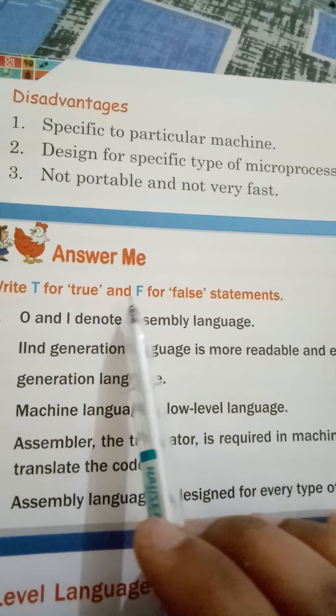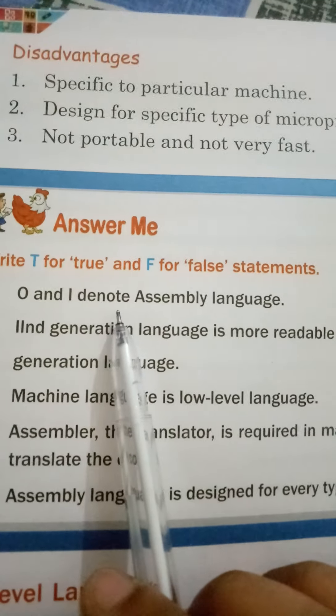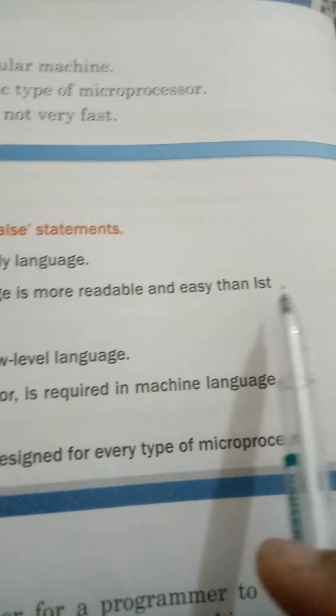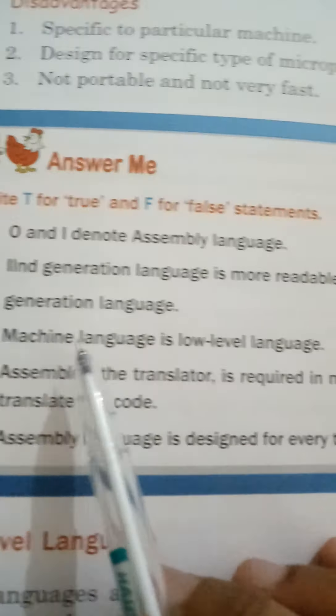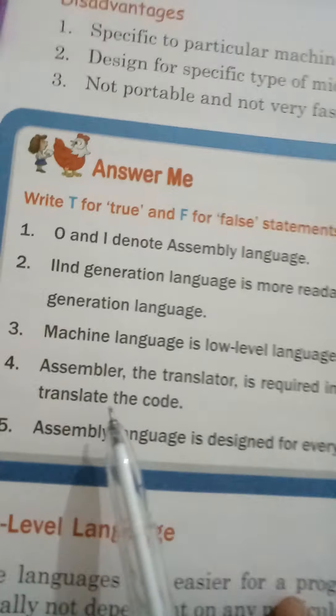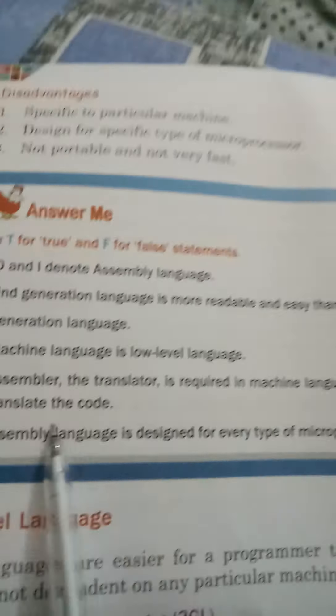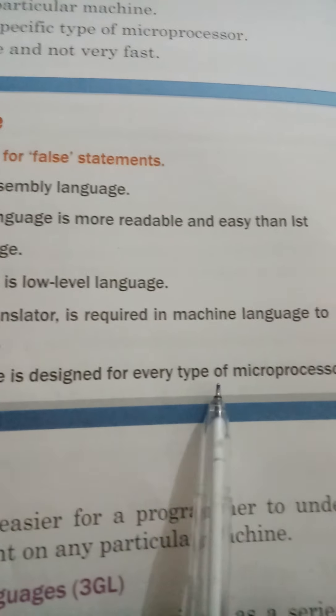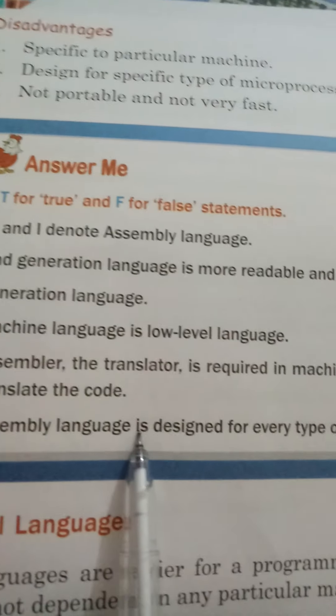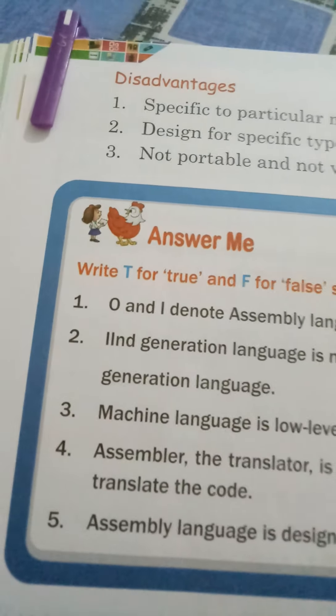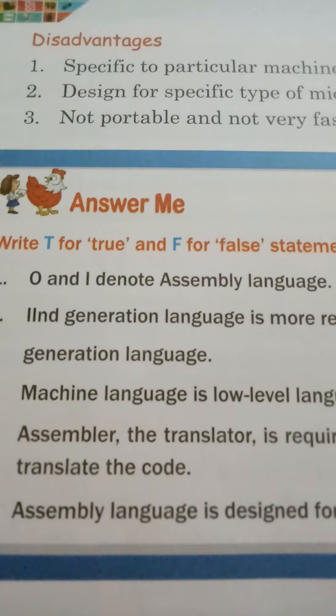Now, activity — True or False. Write T for True and F for False. Zeros and ones do not belong to assembly language — that is False. Machine language is a low-level language — True. Assembler is a translator required in assembly language, not machine language — True. Assembly language is designed for every type of microprocessor — No, that is False; it is for a specific microprocessor.